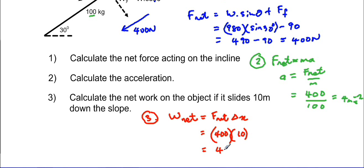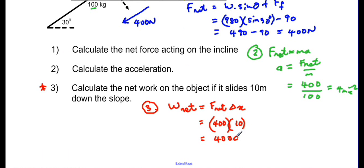And 400 times 10 will give us 4 thousand. Make it 4 thousand joules.